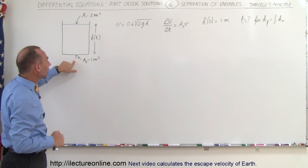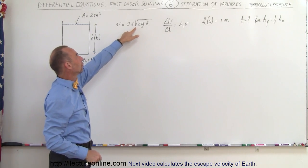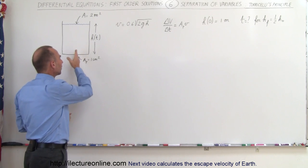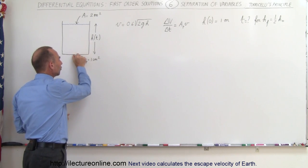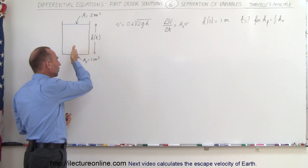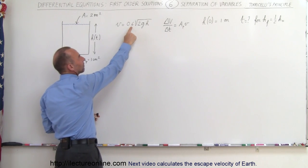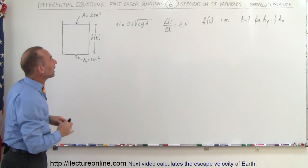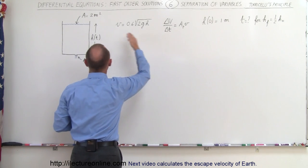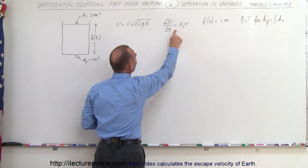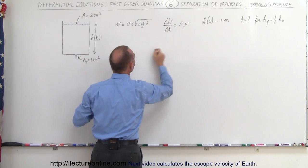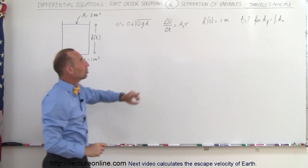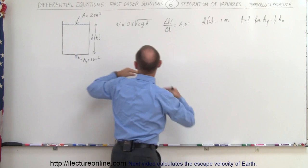We know that the velocity of the water coming through the opening is equal to the square root of 2gh. That would be purely if there was no viscosity in the hole, but because there's a small hole and there's a lot of pressure and viscosity in the water trying to make it through, we have a constant factor that reduces the velocity by some extent. Also, we know that the amount of volume of water coming through the pipe — delta V over delta t — is equal to the cross-sectional area of the pipe times the velocity of the water, which is defined by this equation right there.